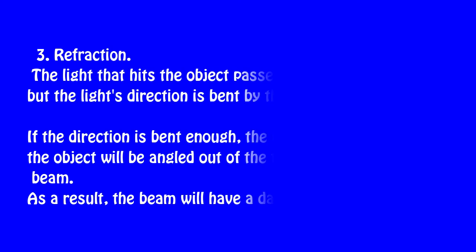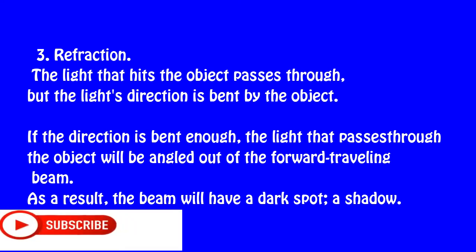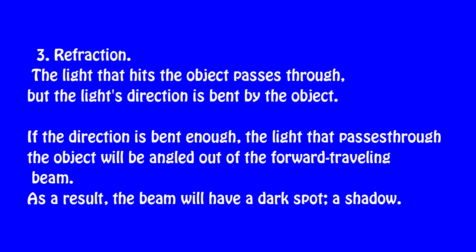The third way is refraction. The light that hits the object passes through, but the light's direction is bent by the object. If the direction is bent enough, the light that passes through the object will be angled out of the forward traveling beam. As a result, the beam will have a dark spot - that is a shadow.